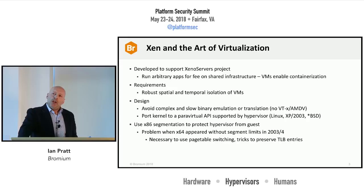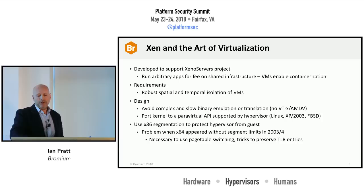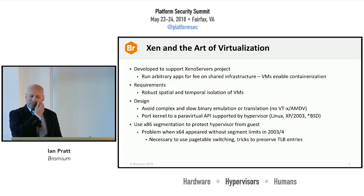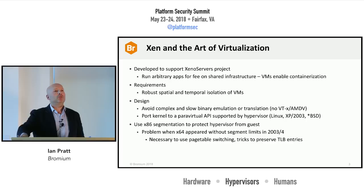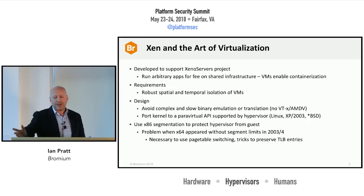That informed the design of Xen, but there were also other considerations that were products of the time. We wanted to run VMs but really wanted to avoid the complexity of doing everything needed to run VMs on the x86 architecture — typically involving binary emulation or translation, which introduced overhead and was a security nightmare. So we came up with the idea of having a paravirtual API which we could then port kernels to. The initial kernel we ported was Linux, and we also ported Windows XP and Windows Server 2003.